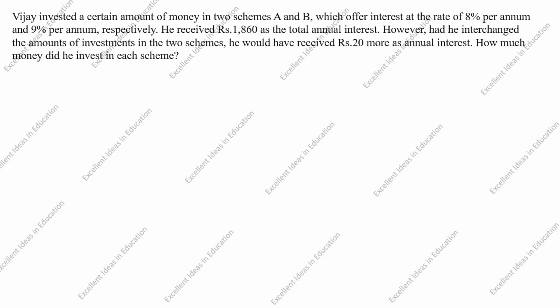Vijay invested a certain amount of money in two schemes A and B, which offer interest at the rate of 8% per annum and 9% per annum respectively. He received rupees 1860 as the total annual interest. However, had he interchanged the amount of investment in the two schemes, he would have received 20 more as annual interest. How much money did he invest in each scheme?